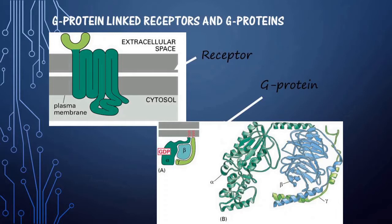This is the structure of a G protein-linked receptor. This is the receptor region where the ligand can bind, and this is the G protein over here. The G protein remains interacting with the receptor, and this is the subunit structure — the alpha subunit, beta subunit, and the gamma subunit.